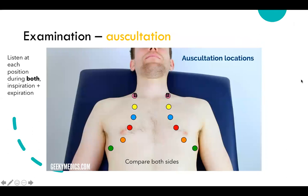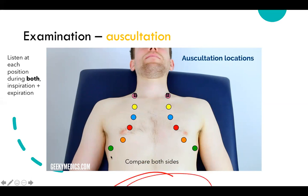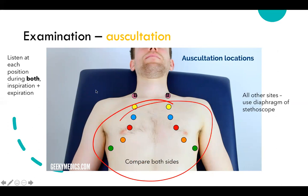During auscultation, listen during both inspiration and expiration — stridor is more likely heard on inspiration, wheeze on expiration. Use the bell just above the clavicle, and the diaphragm for all other areas. Ask the patient to take deep breaths in and out, and change location between breaths. Compare both sides and don't forget to auscultate the axilla.